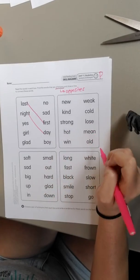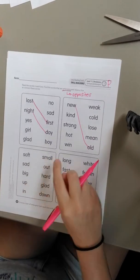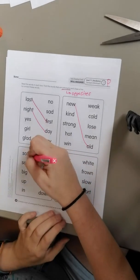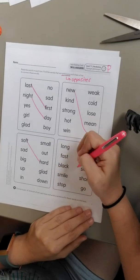Over here we have new and old. Down here we have soft and hard. Here we're going to have long and short.